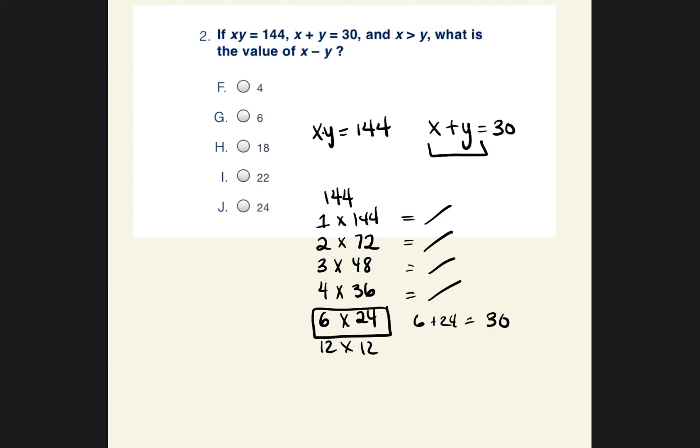Remember, x times y has to equal 144. 6 times 24 does equal 144, so we have that checked out. And then x plus y should equal 30. So 6 plus 24 should equal 30, which is also correct. So now it's saying x is greater than y. And the reason why this is important is because we have to figure out what x is going to be and what y is going to be. Although we know the two options are 6 and 24, we have to strategically place either the 6 as the x or the 6 as the y and same thing with the 24. So because we know that x is greater than y, the x must be the 24 and the y must be the 6.